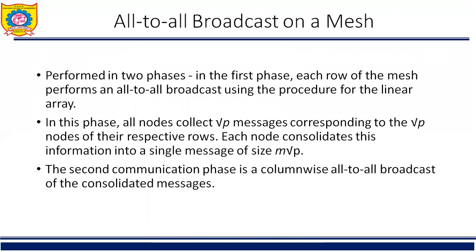Now, all-to-all broadcast on mesh. Just like one-to-all broadcast, the all-to-all broadcast algorithm for a two-dimensional mesh is based on the linear array algorithm, treating rows and columns of the mesh as linear arrays. Communication takes place in two phases. In the first phase, each row of the mesh performs all-to-all broadcast using the procedure for linear array. In this phase, all nodes collect sqrt(P) messages corresponding to the sqrt(P) nodes of their respective rows. Each node consolidates this information into a single message of size M*sqrt(P) and proceeds to the second communication phase. The second communication phase is column-wise all-to-all broadcast of consolidated messages.